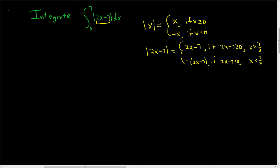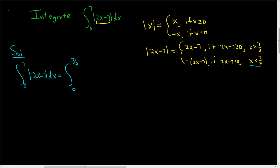This gives us a clear way to break up the definite integral. We have the definite integral from 0 to 7 of the absolute value of 2x minus 7 dx. We break it up: from 0 to 7/2, since x is between 0 and 7/2, we use minus (2x minus 7), distributing the minus sign to get minus 2x plus 7, dx.